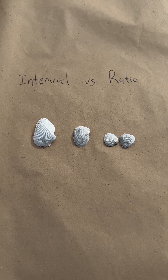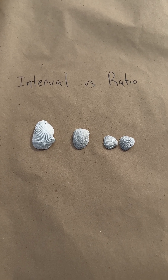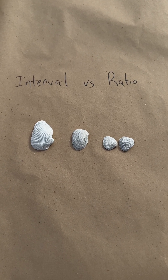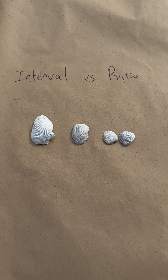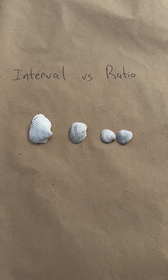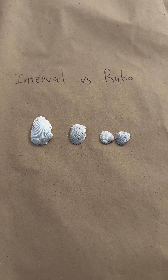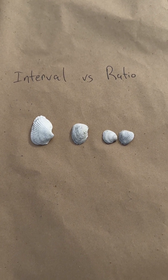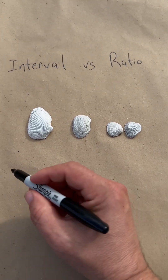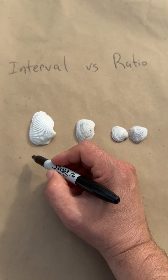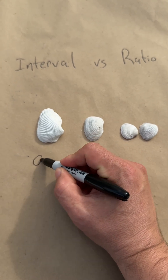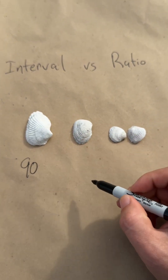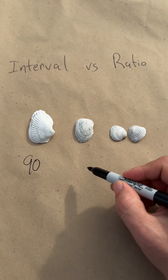Interval data is data that can be at zero, but zero does not indicate the absence of anything. A good way to think about interval data is maybe when we collected these shells. When I collected shell number one, it was 90 degrees outside.